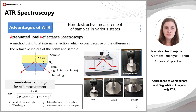ATR spectroscopy makes qualitative analysis easier. ATR stands for attenuated total reflection. Total internal reflection occurs when angled infrared light travels from a high to a low refractive index material. In this case, the prism has a high refractive index and the sample has a low refractive index. However, the light penetrates less than 5 micrometres into the sample. When the light is reflected in this way, some absorption occurs. By measuring the reflected light beam, we can derive an infrared spectrum. This is because the wavelength is proportional to the penetration depth in the sample, as shown in the formula.